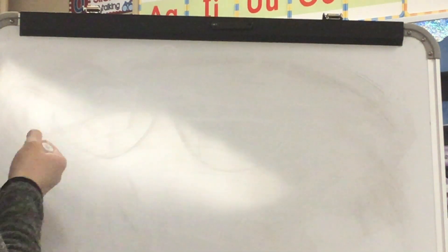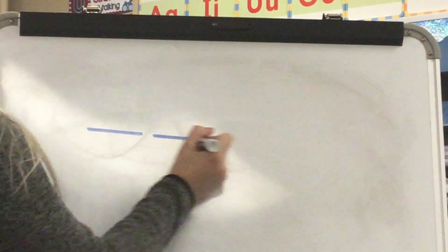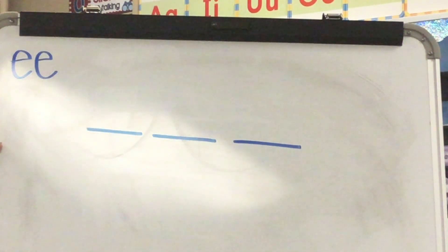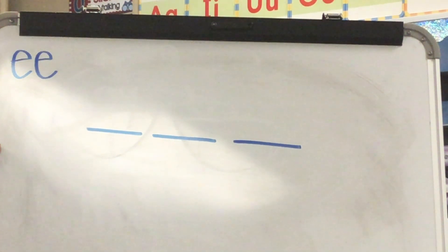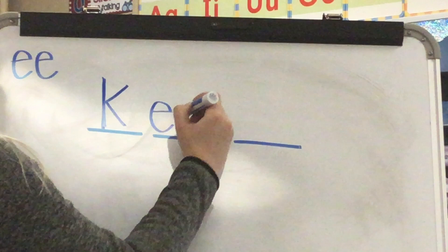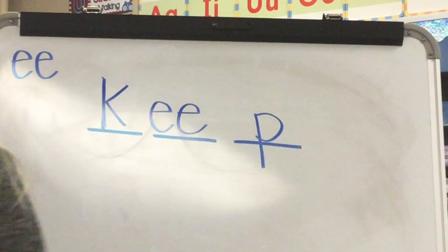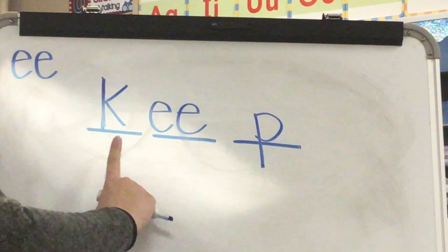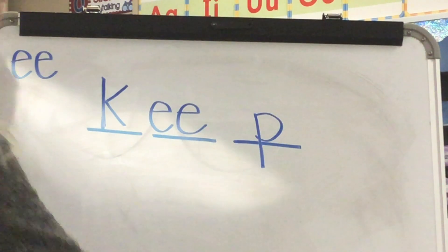Time to stretch and spell some words. Our first word is keep. What word? Keep. Stretch keep: K-E-P. Our first two words will have the EE sound spelling. Write the sound spellings you hear in keep. Check. Spell keep: K-E-E-P. Word? Keep. Yes, keep.